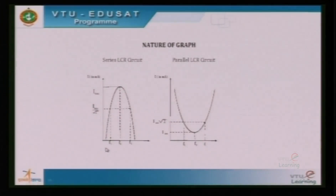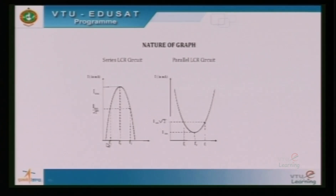As is clear from the graph, as the frequency increases, the current also increases, reaching a maximum then decreasing. Before the resonant frequency, the circuit is more inductive. Beyond the resonant frequency, the circuit is more capacitive. Hence, the characteristic graph shows that at resonance, current is maximum in the series circuit.